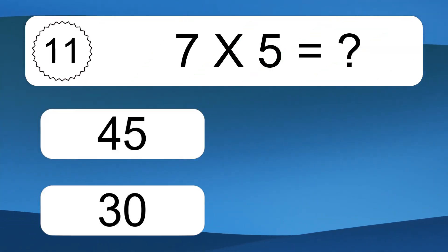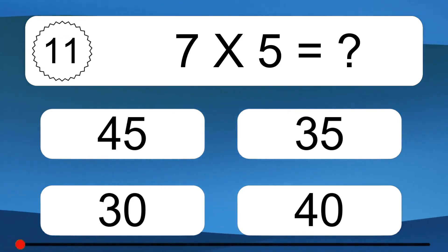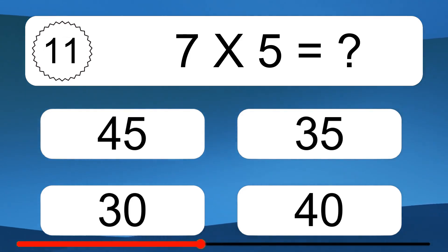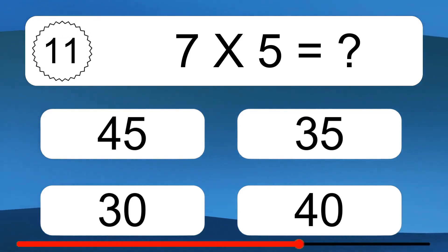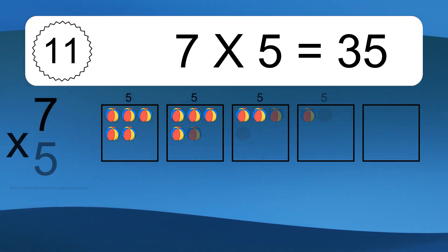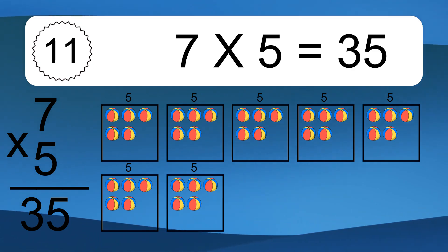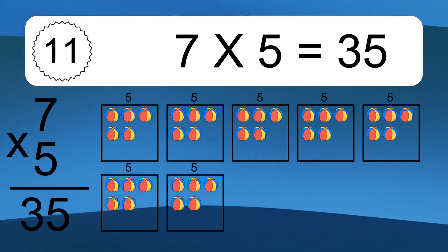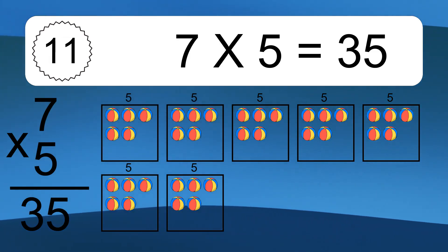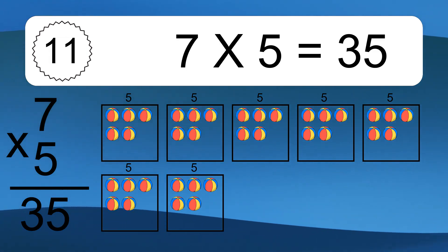7 times 5 equals what? 7 times 5 equals 35. We have 7 boxes, and each box has 5 colorful balls inside. If you count all the balls in all the boxes together, you will have 7 times 5 balls. This equals 35 balls.